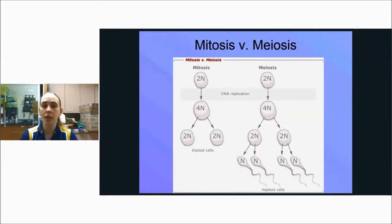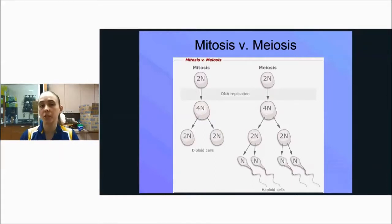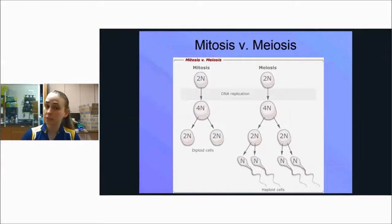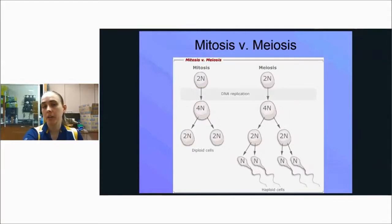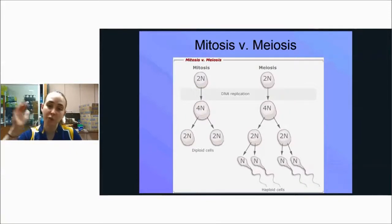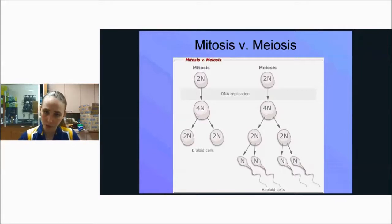Mitosis versus meiosis: mitosis starts with a diploid cell, doubles all the genetic information during the S phase of interphase, then splits to produce two diploid cells. Meiosis starts with a diploid germ cell, doubles the genetic information, then separates homologous pairs so you have two copies but only one set from each parent — bringing it down to N — resulting in four haploid cells.